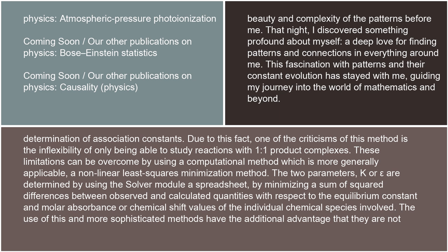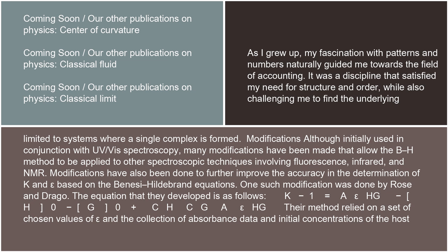These limitations can be overcome by using a computational method which is more generally applicable: a nonlinear least squares minimization method. The two parameters, K and epsilon, are determined by using the solver modulus spreadsheet, by minimizing a sum of squared differences between observed and calculated quantities with respect to the equilibrium constant and molar absorbance or chemical shift values of the individual chemical species involved. The use of this and more sophisticated methods have the additional advantage that they are not limited to systems where a single complex is formed.